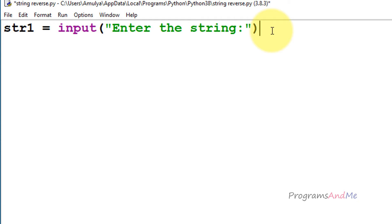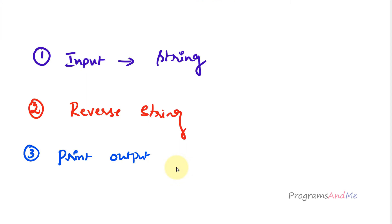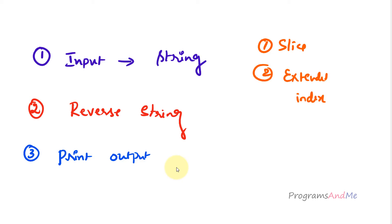Now user entered input will be stored in variable str1. The next step is to reverse the string. We can do this in different ways — here we are using the slicing operator to reverse the string. From the slicing operation we can get a substring from the string, using either the slice constructor or extended indexing.